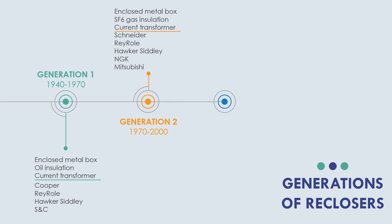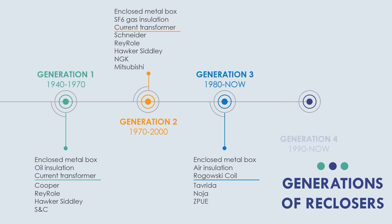Generation 3 started in 1980s and is still produced by some manufacturers. The enclosed box feature is still the same, but insulation was changed to air and current transformer type was replaced with Rogowski coil. Major manufacturers are Noja Power, Tavrida, and S&C.